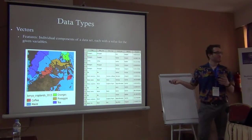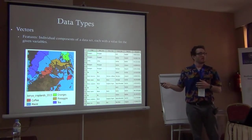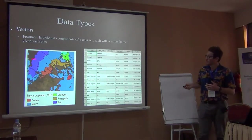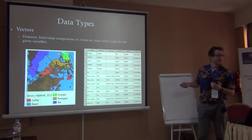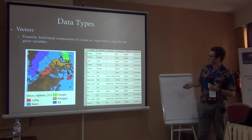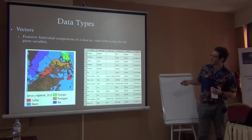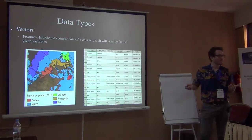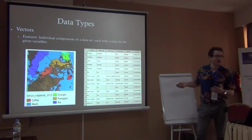Here's the Kenyan croplands we were looking at earlier. One of the other aspects of vector data is that you have a feature table. Each feature — we call it a feature — is one unit of the data set. So maybe this row here is pineapple, shown in orange.